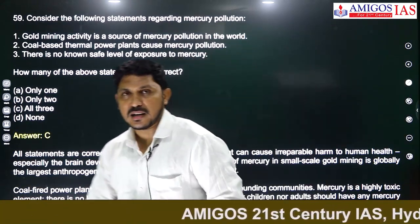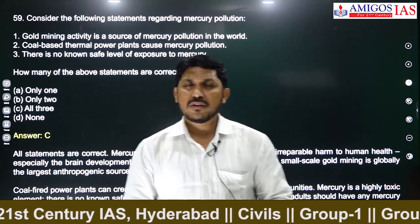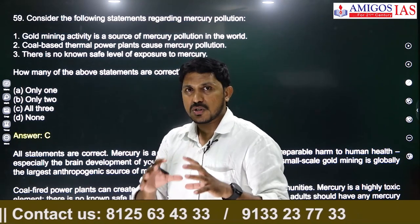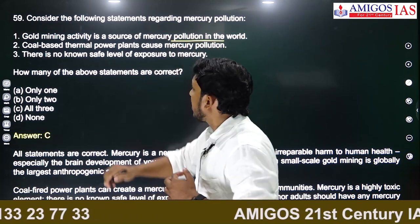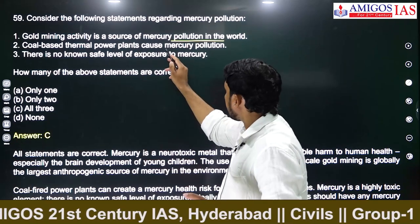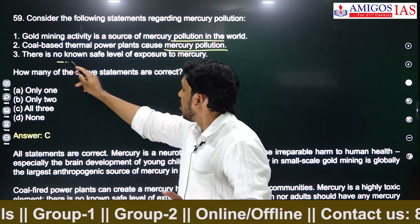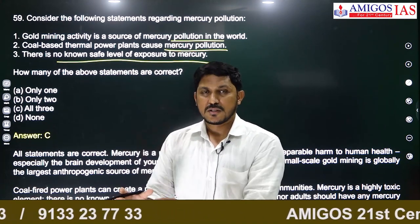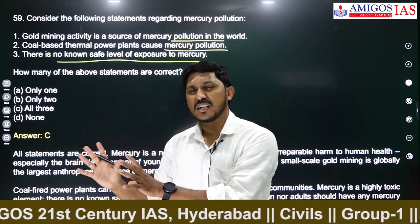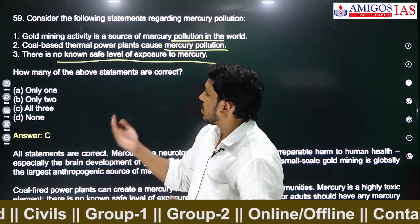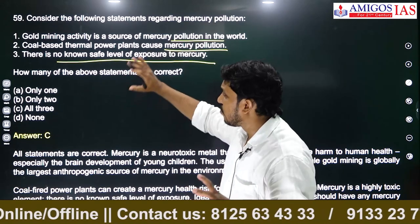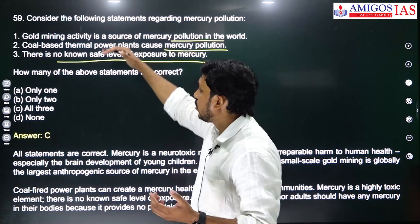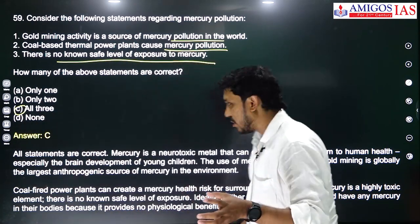Mercury pollution — mercury is highly toxic with no known remedy after prolonged exposure. Gold mining is one of the most important human-induced sources of mercury pollution worldwide — option 1 is correct. Coal-based thermal power plants also cause mercury pollution as a byproduct — also true. There is no known safe level of exposure to mercury; any exposure creates some impact. All three statements are correct.